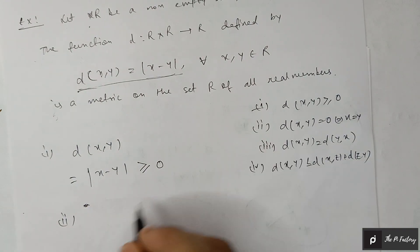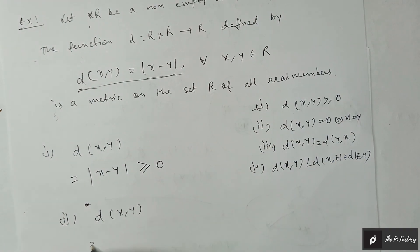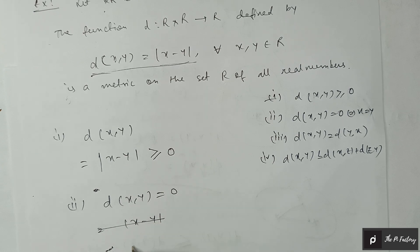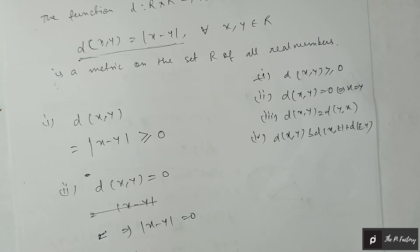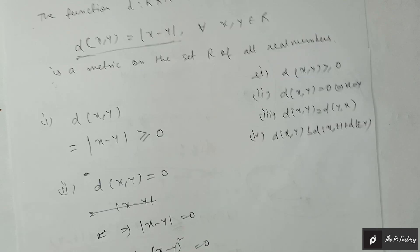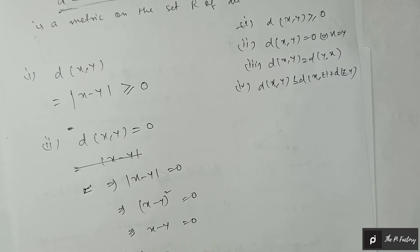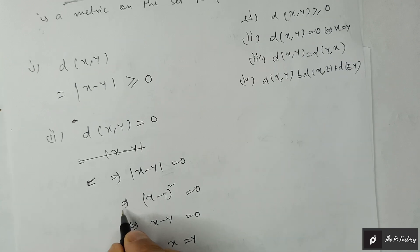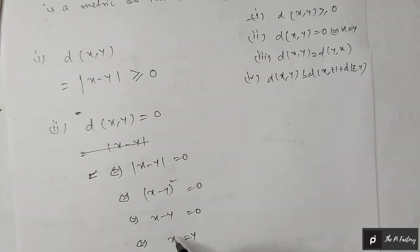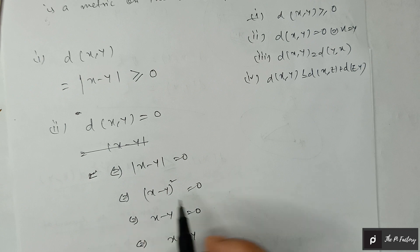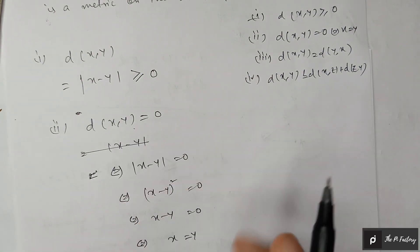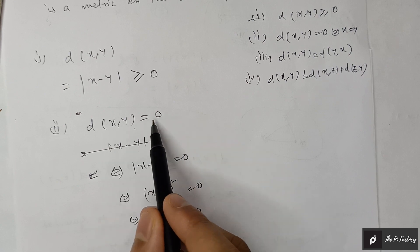For the second condition, we have to prove d(x, y) = 0 if and only if x = y. d(x, y) = 0 implies |x − y| = 0 implies x − y = 0 implies x = y. Conversely, if x = y, then x − y = 0, so |x − y| = 0, and d(x, y) = 0. Hence d(x, y) = 0 if and only if x = y.